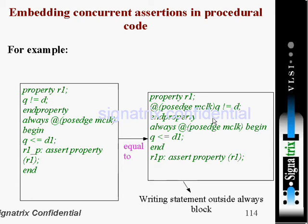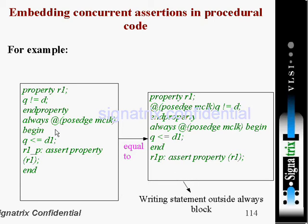The same kind of structure is equivalent to this one: property r1 at the posedge of clock, q is not equal to d, defined in the property. Here we are embedding the clock inside the property and asserting it with 'assert property r1' outside the always block. So writing an assert directive outside an always block is equivalent to writing the assert directive inside an always block.